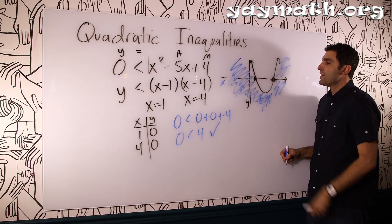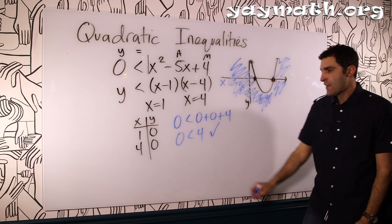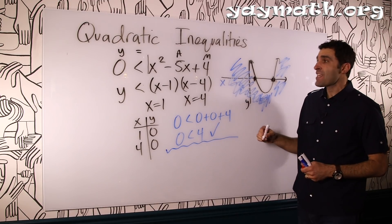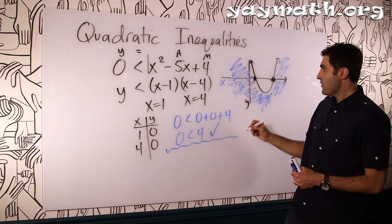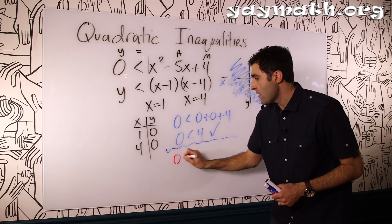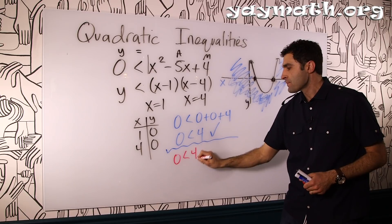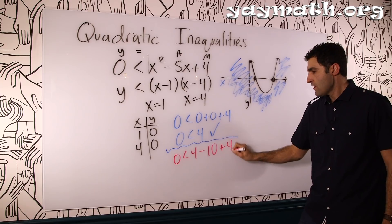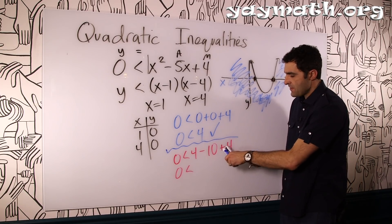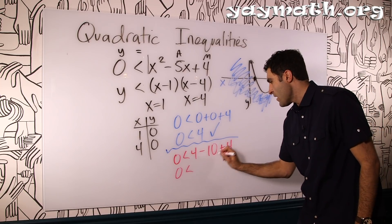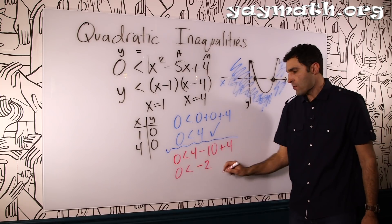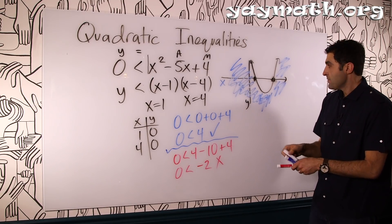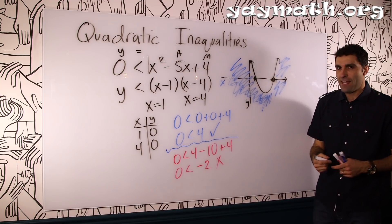So all these points will work. Let's plug in stuff in the middle of 1 and 4, like 2. Let's plug in 2. Is, we'll put it in red to imply that it's not okay. No bueno. So here we go. Plug in 2. 0 less than. 2 squared is 4 minus 5 times 2 is 10 plus 4. We'll get 0 less than. This is negative 6 plus 4. Hook it up. This is negative 2. Is this true? No, it's not.